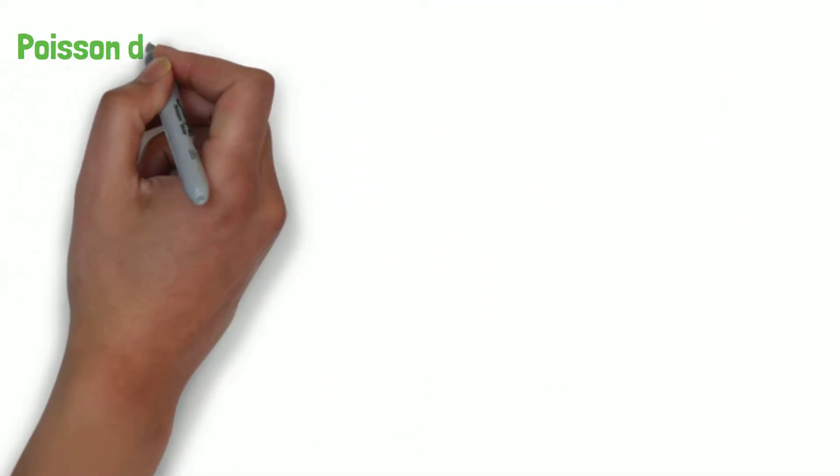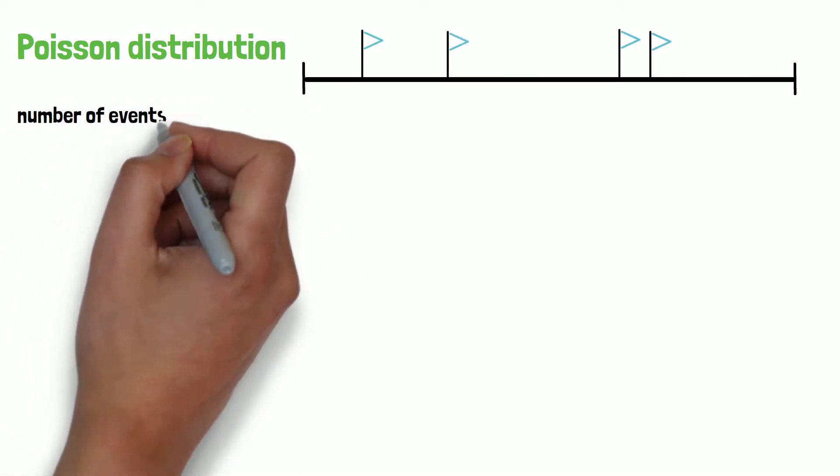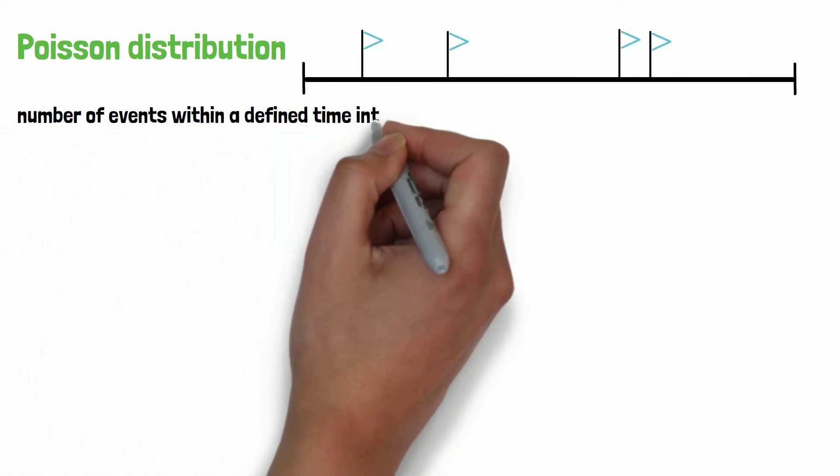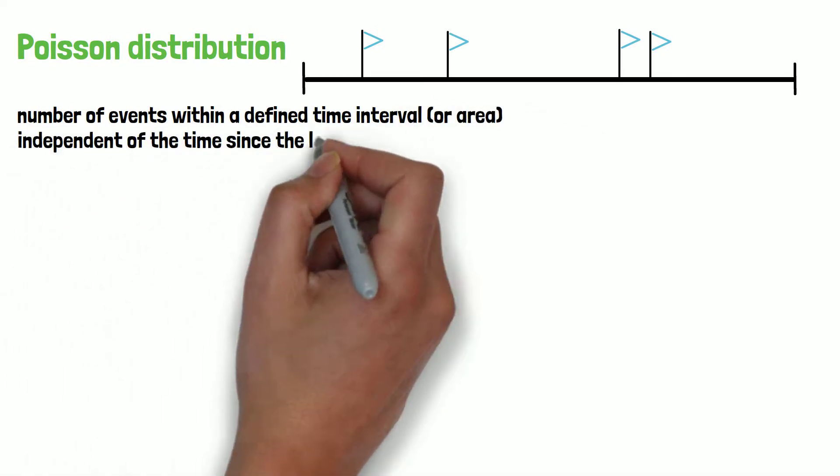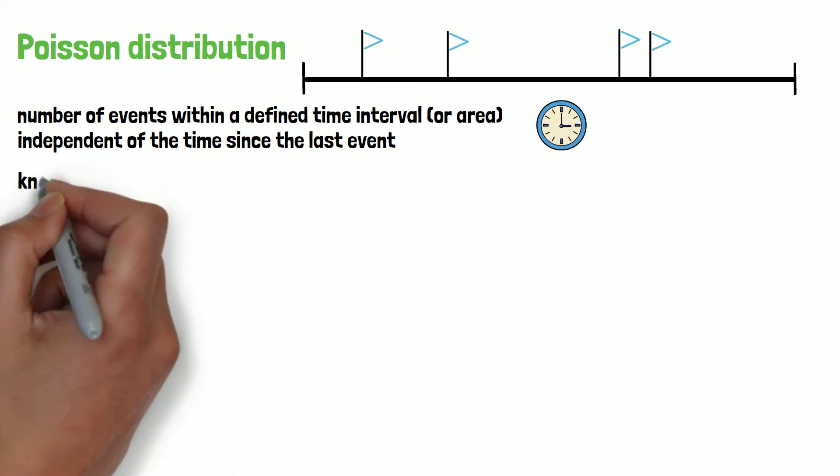The Poisson distribution is modeling the number of events within a defined time interval or area, for events that occur independent of the time since the last event and with a non-constant probability to occur.